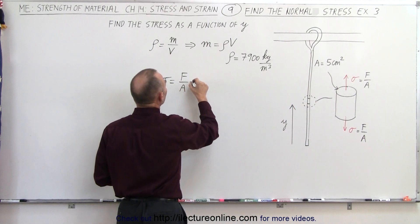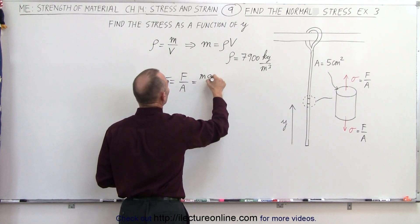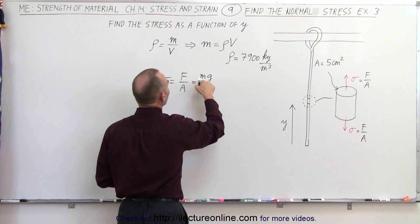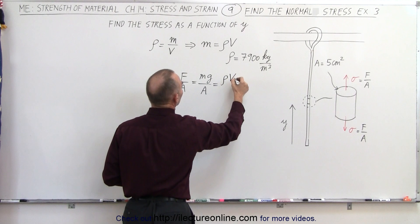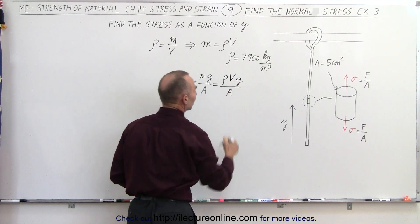So the force will be equal to the weight mg divided by area, and the mass can be defined as density times volume, so we have ρVg divided by the area.